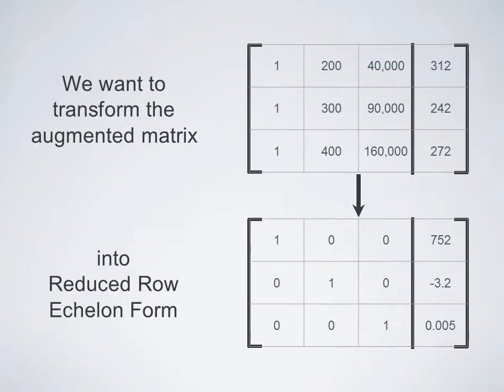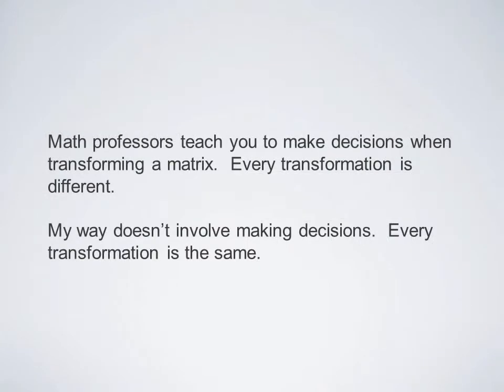Let's transform our augmented matrix into reduced row echelon form. The way that I do it is probably different from the way that you were taught to do it in school. In school, you were taught that you could analyze the matrix at every step. And when you would multiply a row, you would have a choice of which row to multiply. My algorithm does not make any choices at all. It's very automatic, very mechanical.